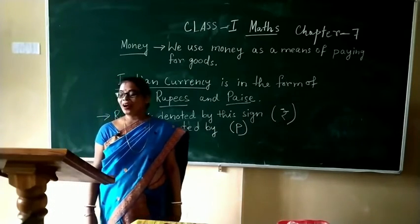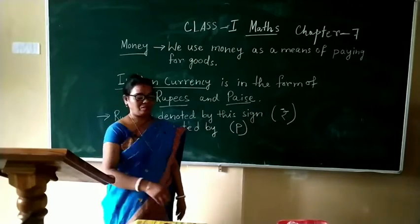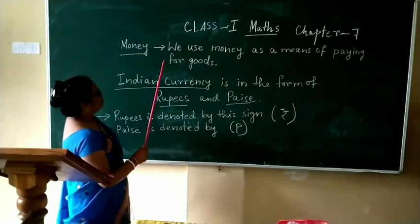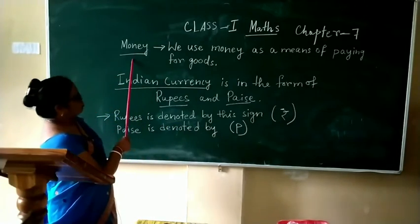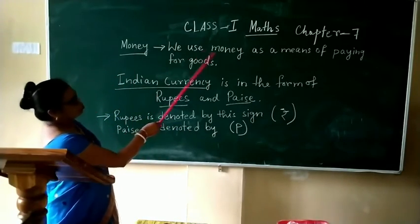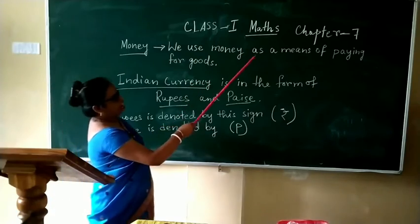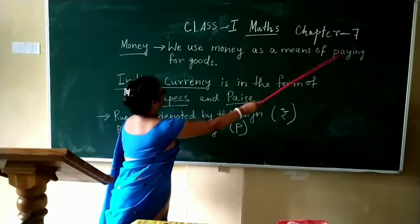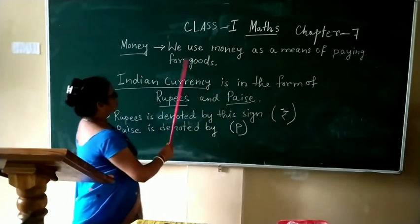Now, what is money? See — money. We use money as a means of paying for goods.